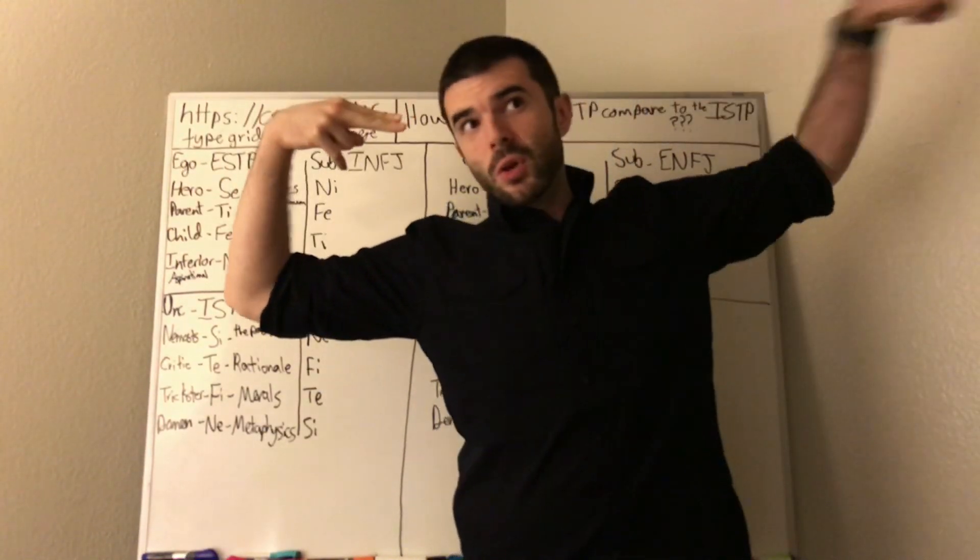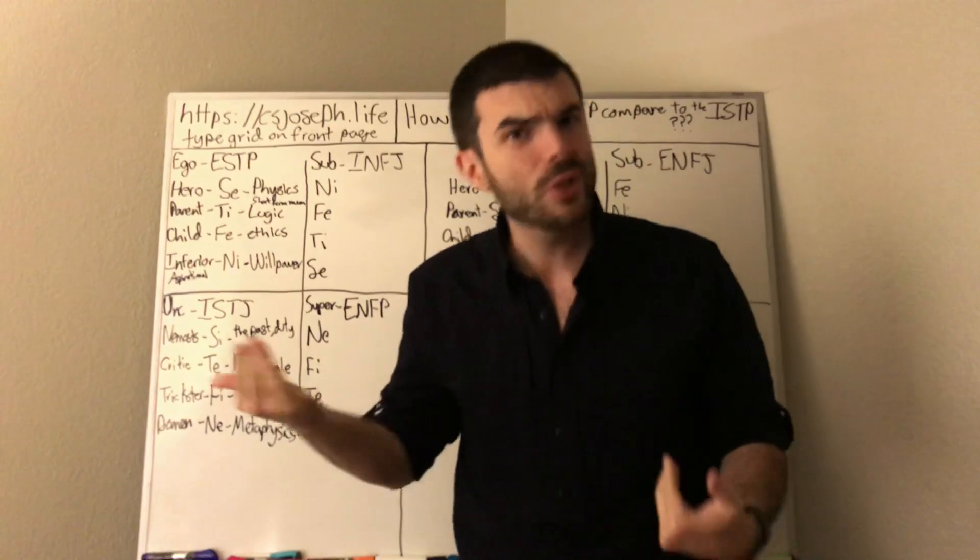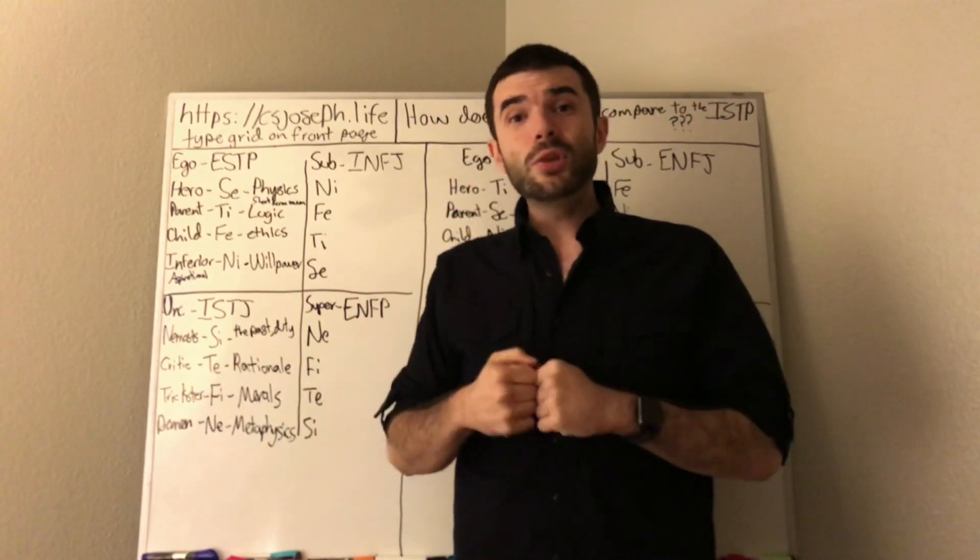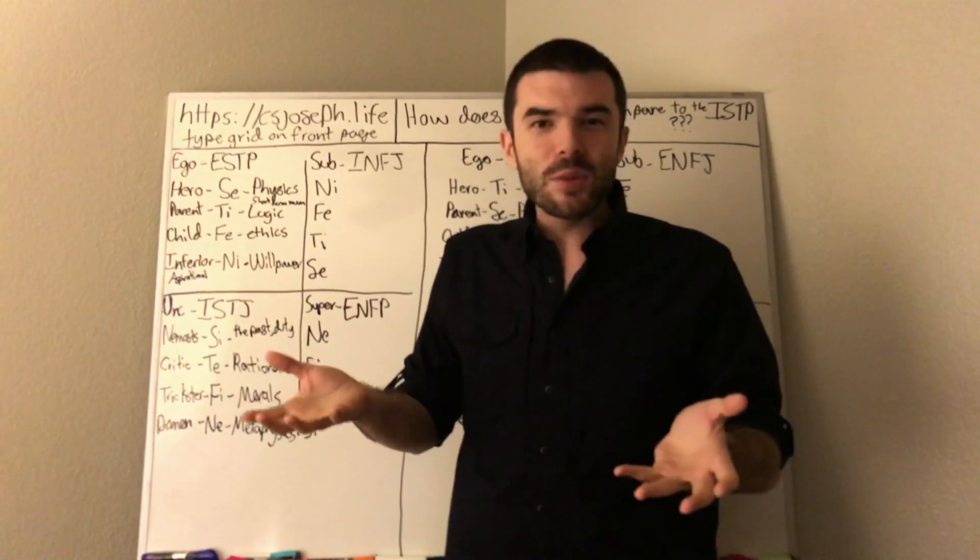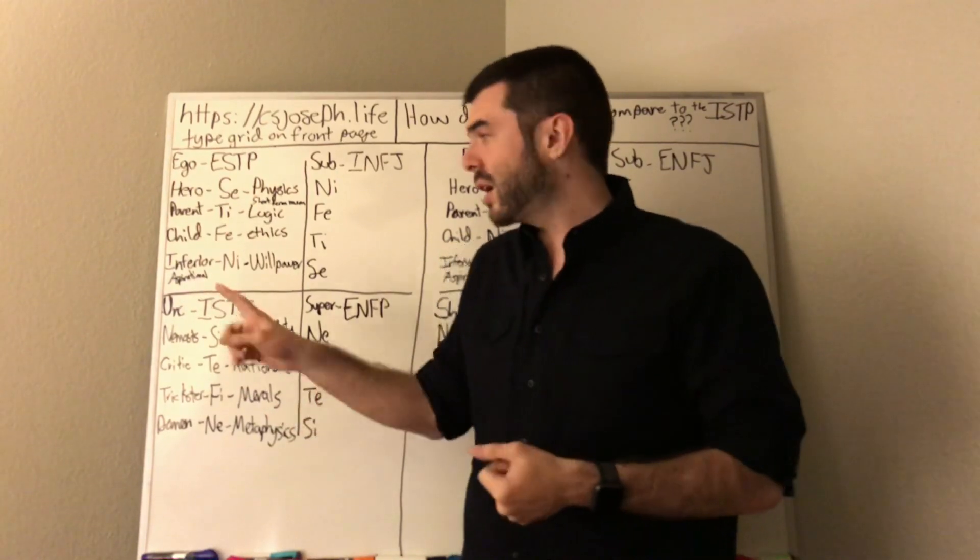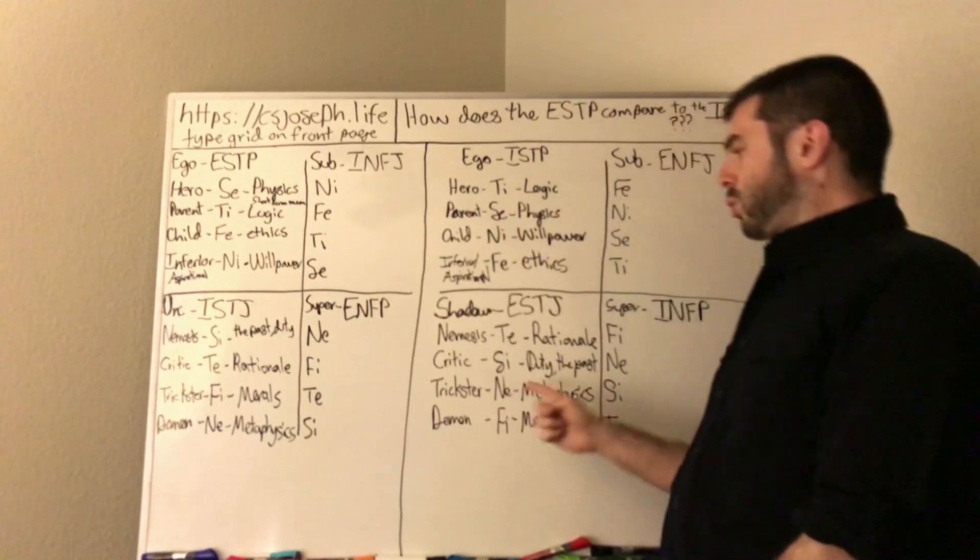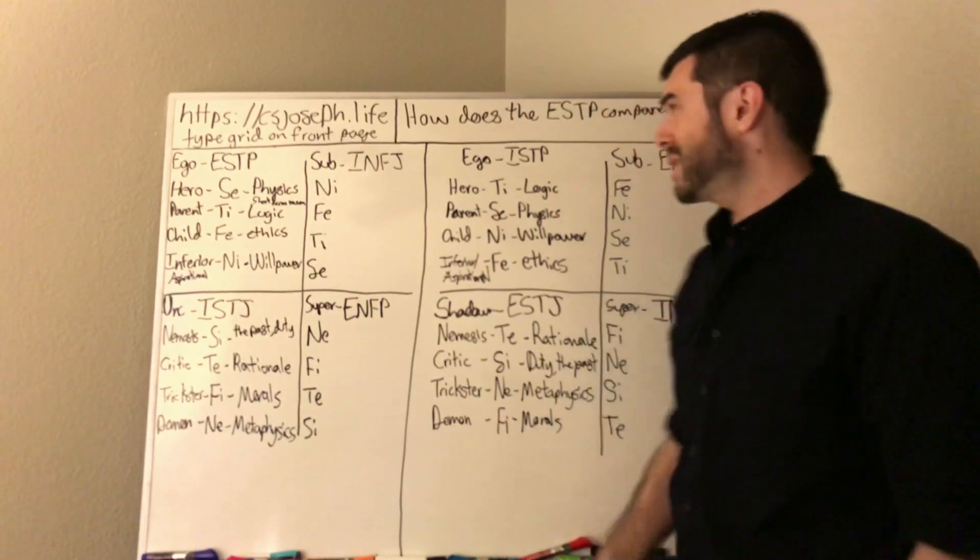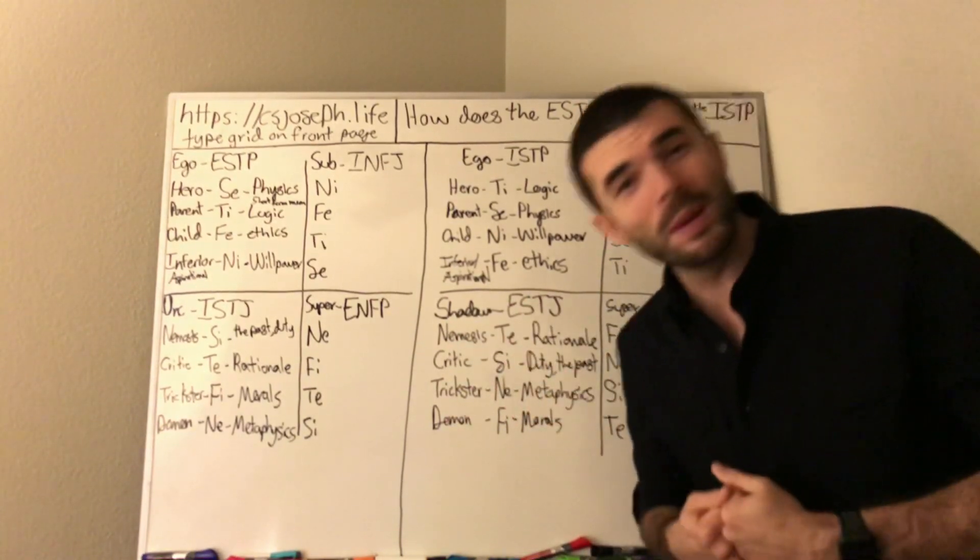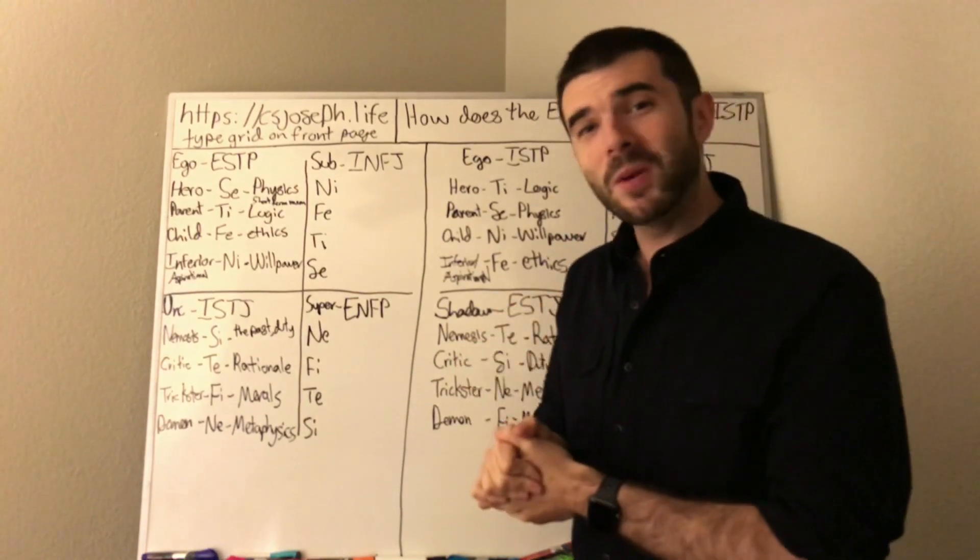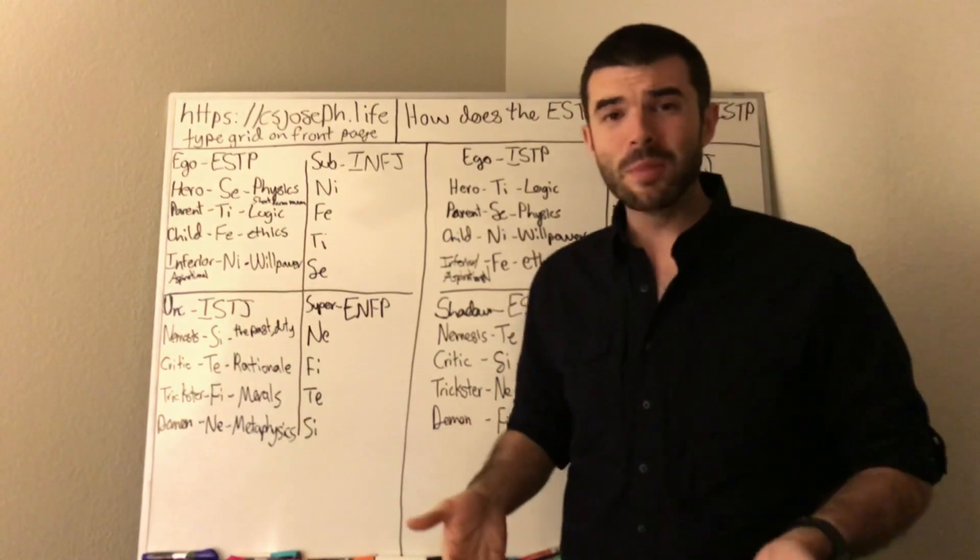So the ESTP, extroverted sensing here, they're all about the moment, all about that physical awareness, all about that short-term memory. They have a huge pool of short-term memory. The problem is with short-term memory, because it's like memory in a computer, new information comes in and it pushes the old information out. And they have a smaller hard drive with their SI nemesis, which is the past, a person's connection to the past, the long-term memory and whatnot. That connection to the past is a little bit shorter. Well, that basically means they don't have as much hard drive space to fit past memories on. So they are constantly worrying about their past all the time. Whereas the ISTP is more critical towards their past and critical towards their experience.